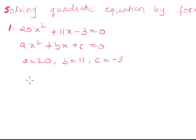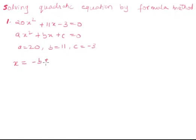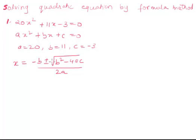To solve it using the formula method, the formula is x equals minus b plus or minus under root of b squared minus 4ac, all over 2a. The values of a, b, and c are obtained by comparing the given equation with the general form of the quadratic equation.